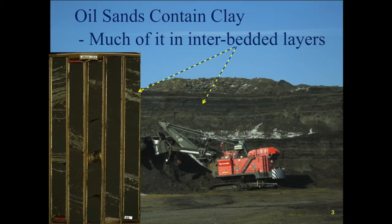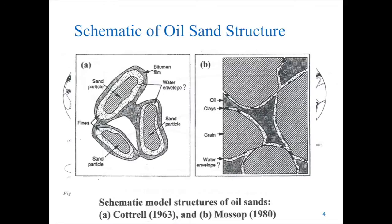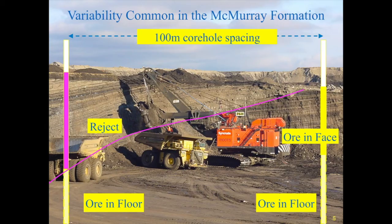Oil sands deposits contain clay, but the clay is not evenly distributed. Much of it is contained in interbedded layers that you can see on the mine face and in the core hole samples on the left. The in-situ deposits are a dense sand matrix infused with bitumen. The grains of sand are surrounded by a water lens called connate water, and the water envelope makes the water extraction process function very easily, and it also contains a good portion of the fine clays. Some of the clay-rich lenses may only be centimeters thick — they can be discontinuous or on a sloped plane dissecting the mining bench. This shows the variability that commonly occurs in the McMurray formation.